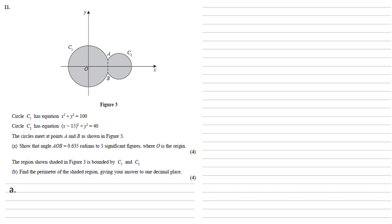The circles meet at points A and B as shown in Figure 3. For part A we need to show that angle AOB equals 0.635 radians to three significant figures where O is the origin.